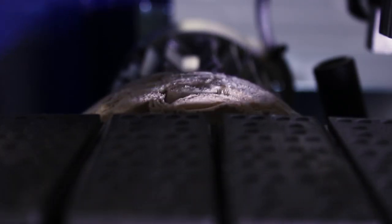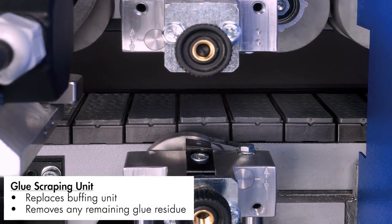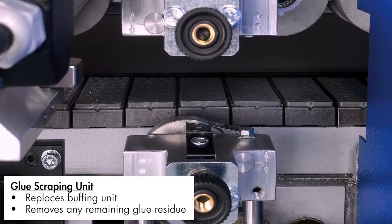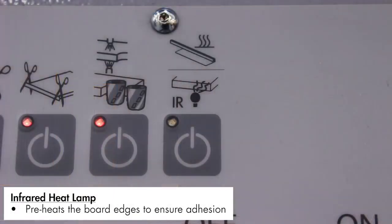Alternatively, the buffing unit can be switched for a glue scraping unit, which removes any remaining glue residue from the panel for a superb result requiring no further finishing. Further options include the addition of an infrared heat lamp for preheating the board edges.